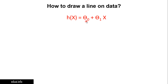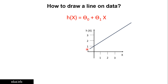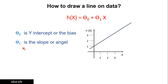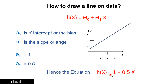We know what x is — it's the input. But what are θ₀ and θ₁? θ₀ is called the y-intercept or bias: wherever a line intercepts on the y-axis is θ₀. If a line intercepts at 1 on the y-axis, θ₀ = 1. θ₁ is the slope or angle — at what degree the line is drawn. If the line is at 45 degrees, θ₁ is approximately 0.5. So with θ₀ = 1 and θ₁ = 0.5, the equation is h(x) = 1 + 0.5x.